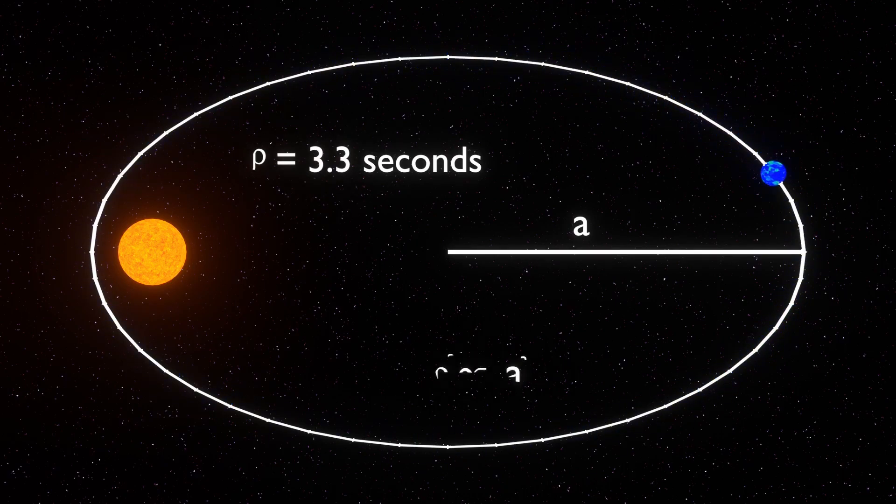Therefore, period squared is proportional to the semi-major axis cubed, or this equation.